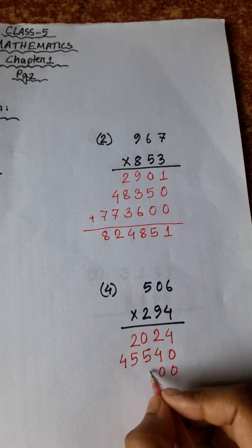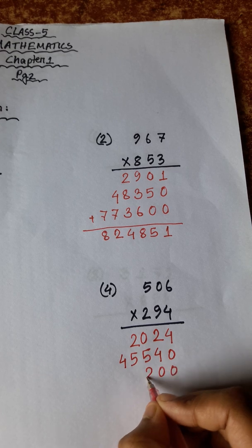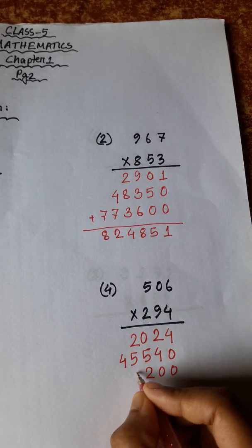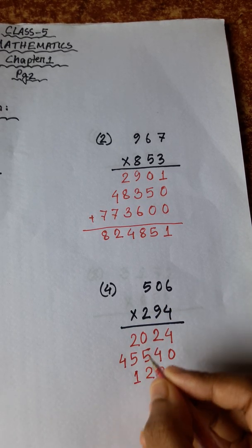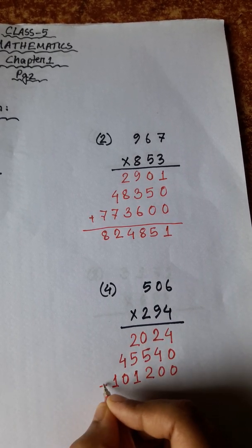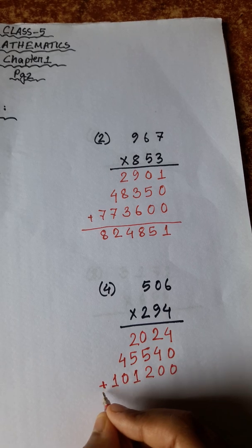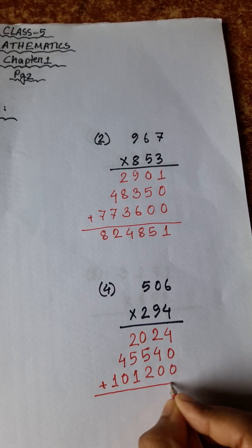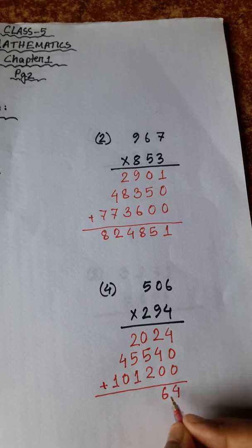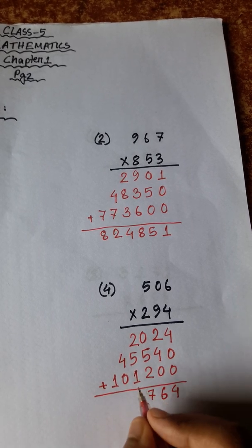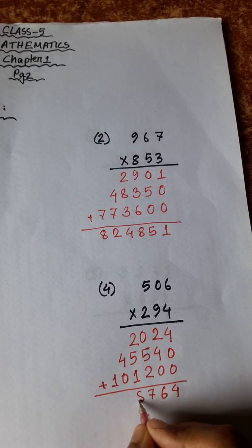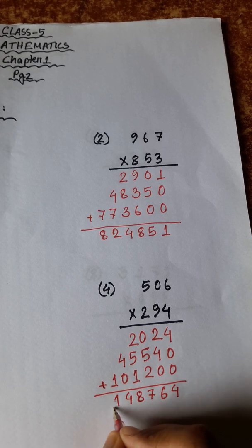5 twos are 10. 4 plus 2 is 6, 5 plus 2 is 7, 5 plus 2 is 7, plus 1 is 8. Final answer: 148,764.